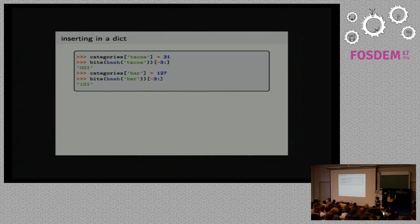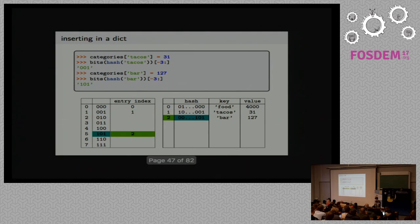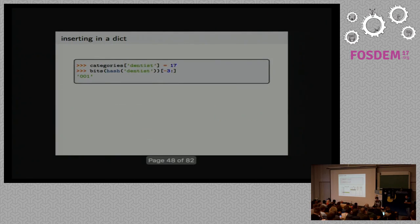Now let's add tacos and bar. The last three bits of the hash of tacos turn out to be 0, 0, 1, and for bar it's 1, 0, 1. We add tacos: a new entry is added in the entries table, and in the indices table at 0, 0, 1 this maps to entry index 1. Then we add bar: the hash is 1, 0, 1, so in the indices table at position 5, this maps to entry index 2 — which is bar.